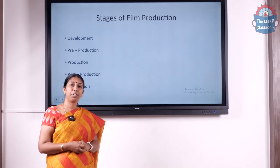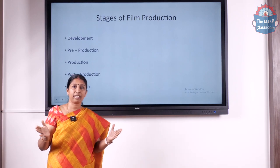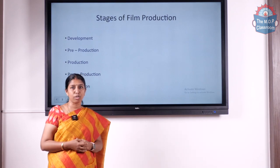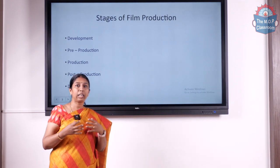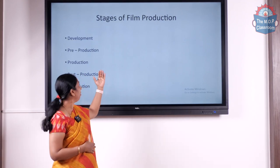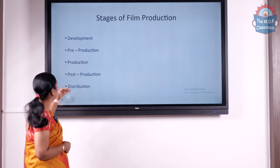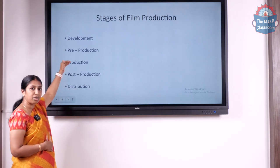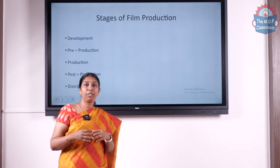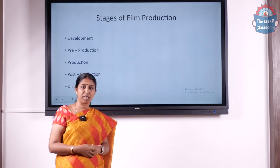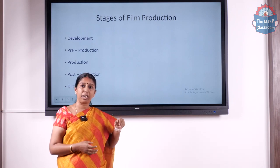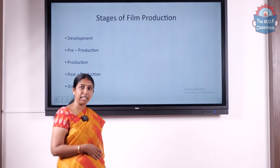The various stages of film production can be classified generally into three broad categories: pre-production, production, and post-production — which television production also covers. But in film production we go a little bit more elaborate because it is quite a tedious and time-consuming process. We are divided into five broad categories: the development stage, the pre-production stage, the production stage, the post-production stage, and the distribution stage.